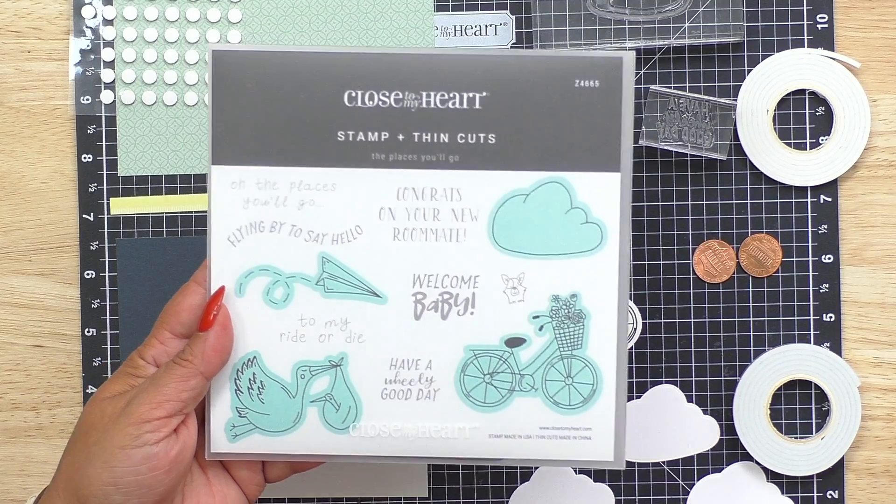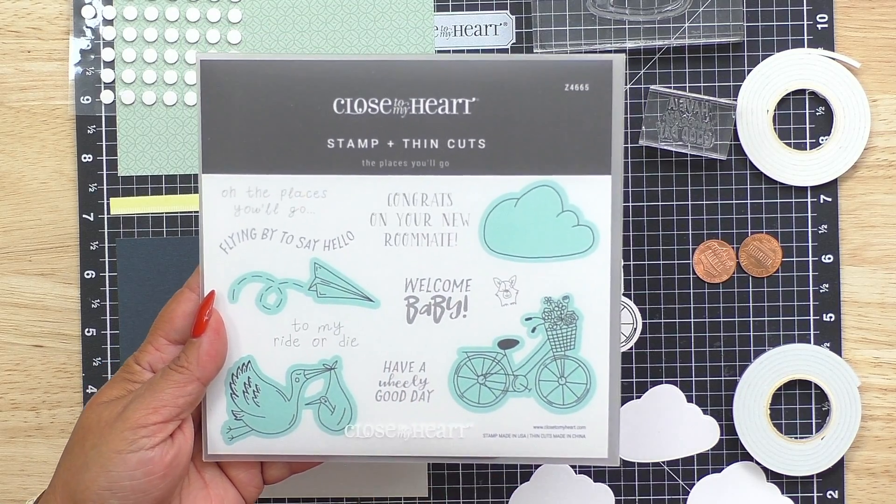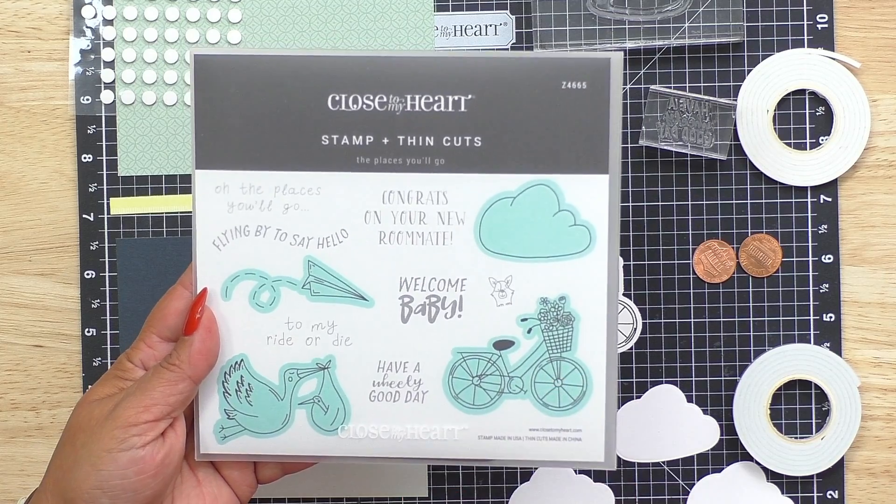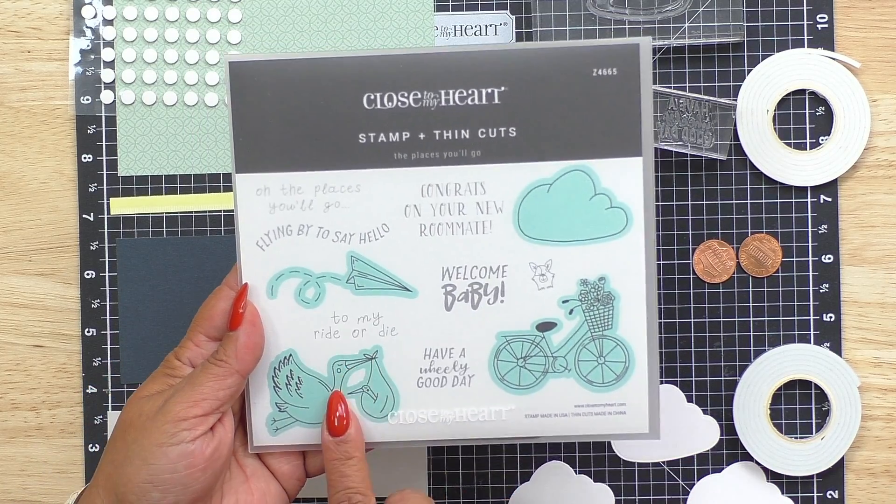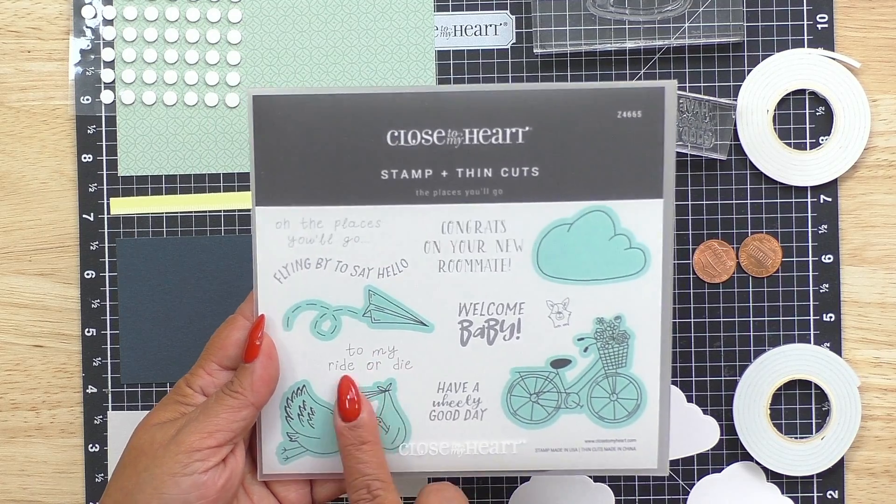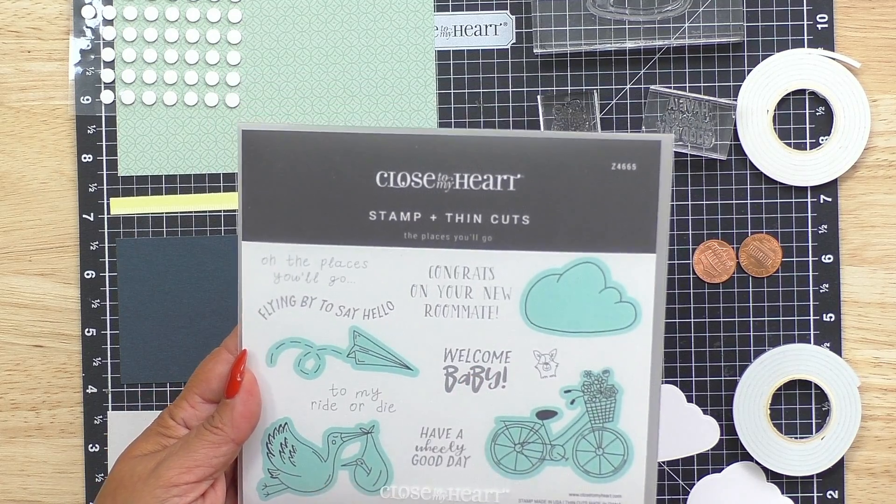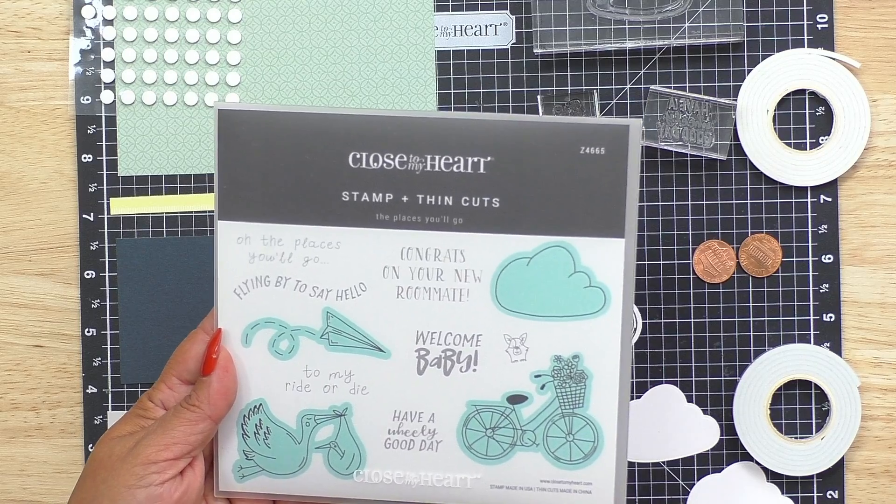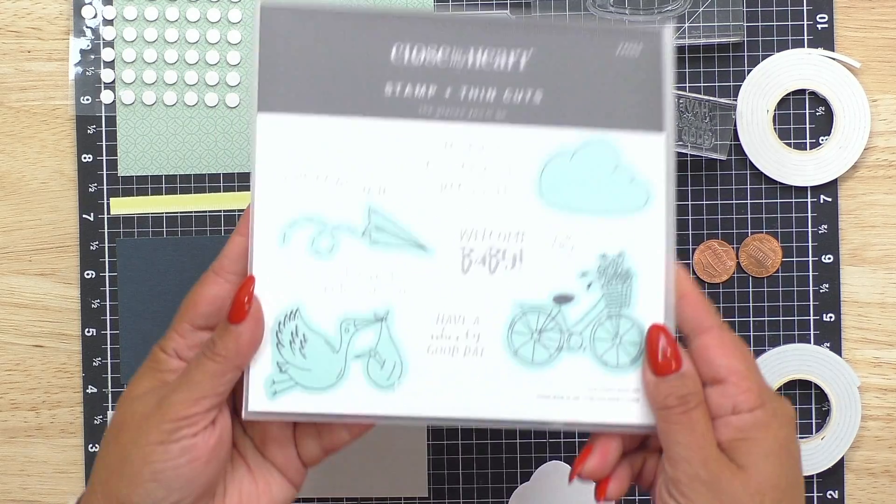You've got some different sentiments. This one we did have a wheelie good day because that goes with the bike. You see here's the stork too and then you've got might ride or die that could go with the bike. Welcome baby for the stork. Congrats on your new roommate. Flying by to say hello and all the places you'll go.